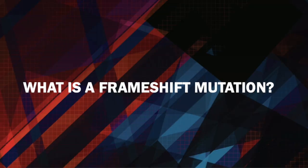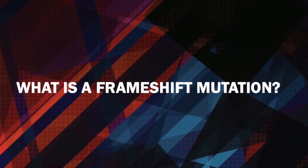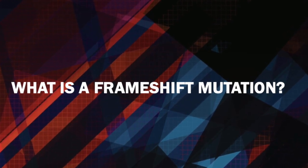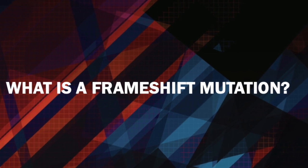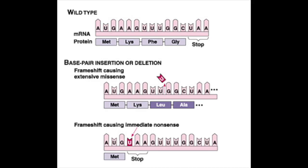So what is a frameshift mutation? A frameshift mutation occurs when the addition or loss of DNA base changes a gene's reading frame. A reading frame consists of groups of three bases that each code for one amino acid. A frameshift mutation shifts the grouping of these bases and changes the code for amino acids. The resulting protein is usually, but not always, non-functional.